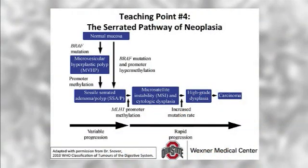This review includes a line diagram adapted with permission from Dr. Dale Snover. The original illustration can be found in the 2010 WHO table 8.49. Briefly, this pathway is characterized by the normal colonic mucosa acquiring BRAF activating mutations, resulting in either a microvesicular hyperplastic polyp or an SSA/P. Subsequent promoter methylation of the MLH1 gene results in MLH1 protein loss and, consequently, microsatellite instability, as the SSA/P acquires increasing cytologic dysplasia and ultimately progresses to invasive carcinoma.